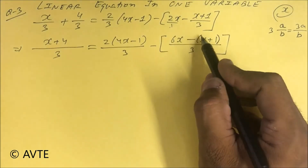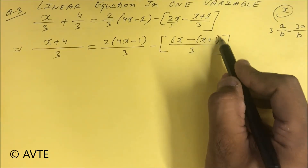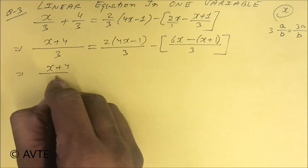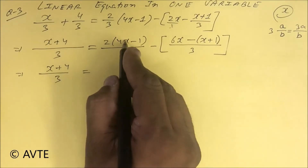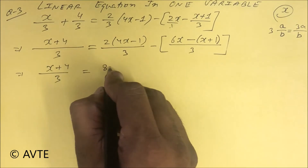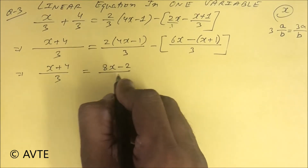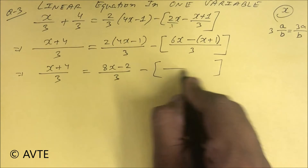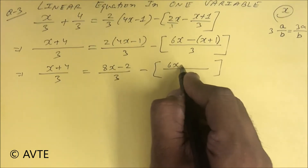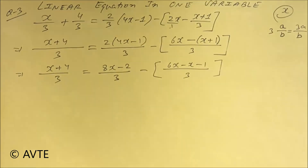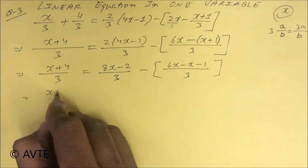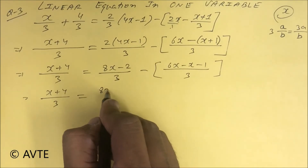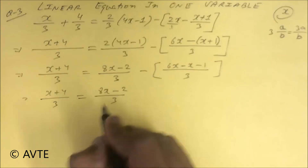There is an invisible bracket — be careful. This x plus four upon three equals 8x minus two upon three. Now inside the bracket first we solve: this is 6x minus x minus one. So guys, x plus four upon three is equal to 8x minus two upon three.